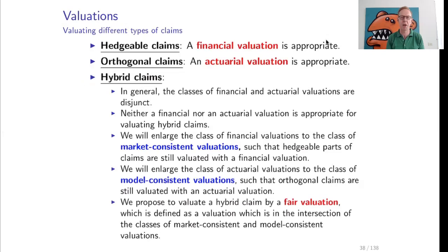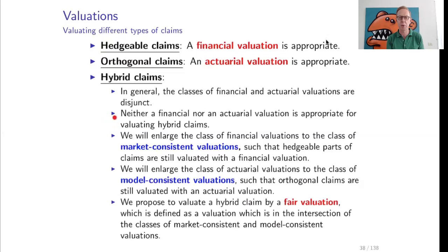Now let us look at hybrid claims. Hybrid claims are claims which are not hedgeable but also not orthogonal — they have a bit of both properties. Neither a financial nor an actuarial valuation is appropriate for hybrid claims. A financial valuation does not account for the non-hedgeable part, and an actuarial valuation does not account for the hedgeable part that could be priced via the price of the hedge.